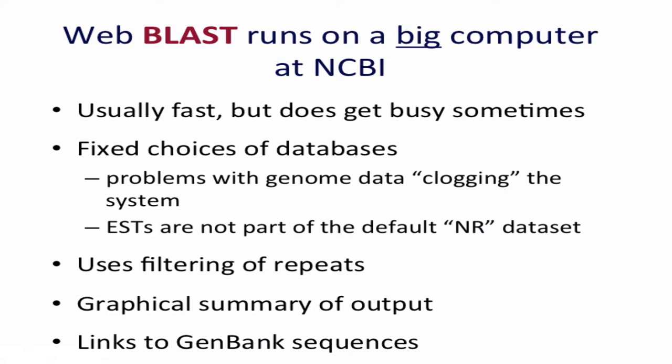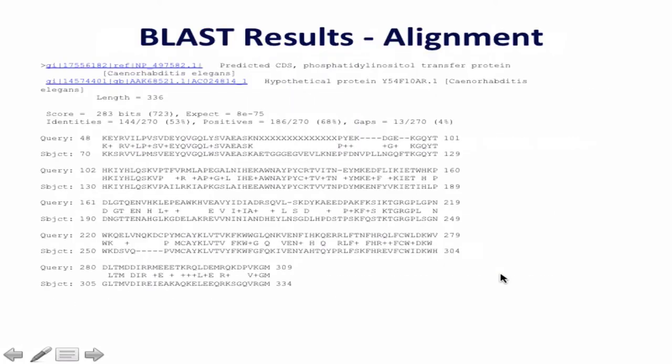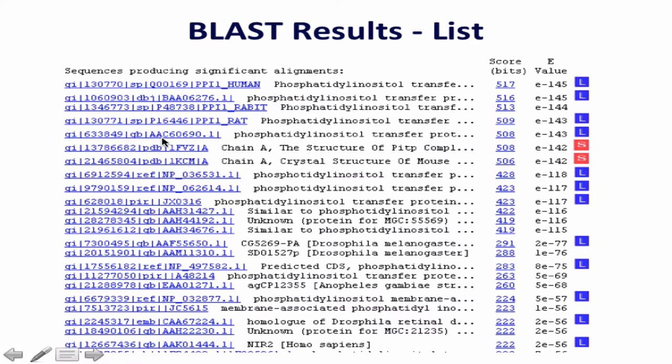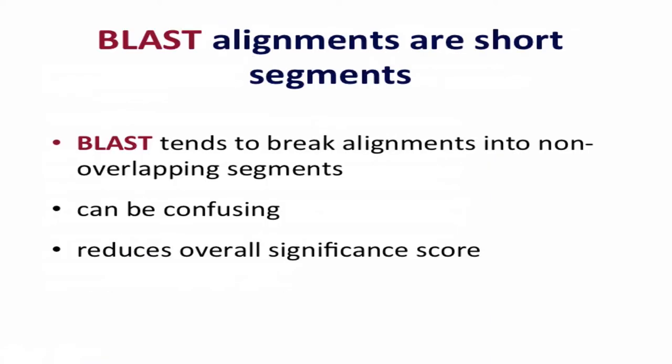NCBI BLAST is fast but does get busy and have bad days. It has a fixed choice of databases that might not always be optimal. It has repeat filtering on by default — if your query has an ALU element, for example, it will filter that out and look for flanking sequences. It has a nice graphical summary and hyperlinks so you can quickly pull up matching database entries. Those are the nice things about using web BLAST.